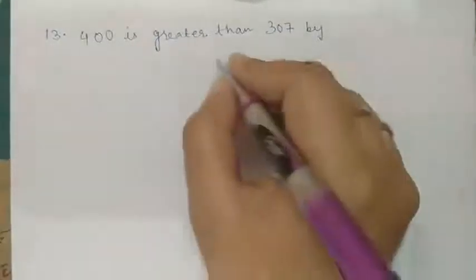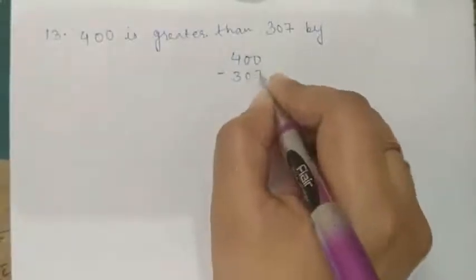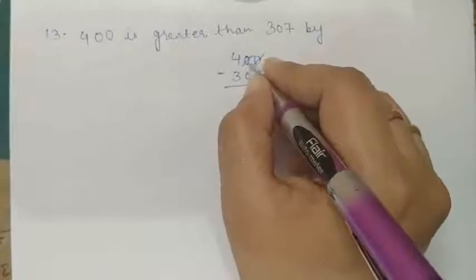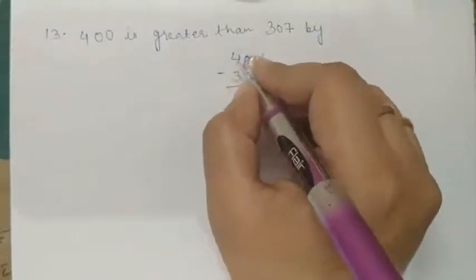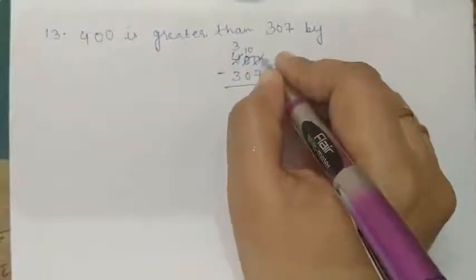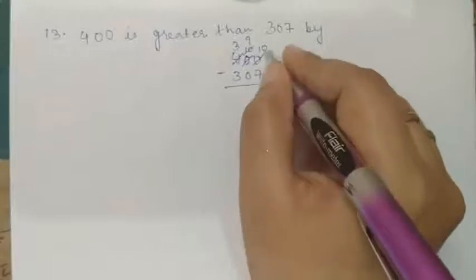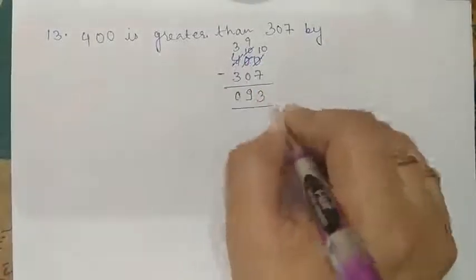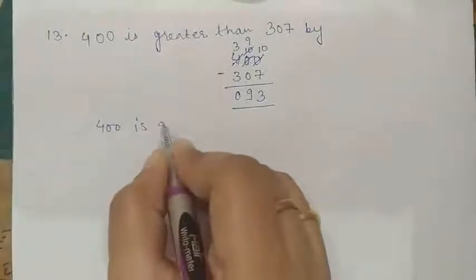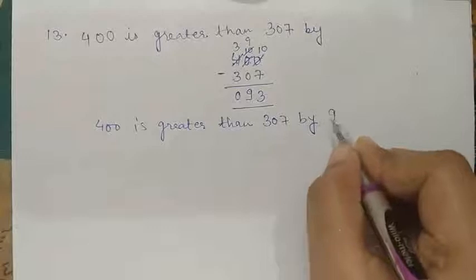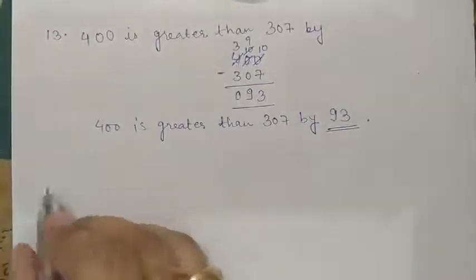We subtract 400 minus 307. 0 minus 7 we cannot do, so this 0 will borrow from the next 0, which will borrow from 4. The 4 becomes 3, the middle digit becomes 10, gives 1 to make 10 in the units. 10 minus 7 is 3. 9 minus 0 is 9. And 3 minus 3 is 0. So 400 is greater than 307 by 93. This is our answer.